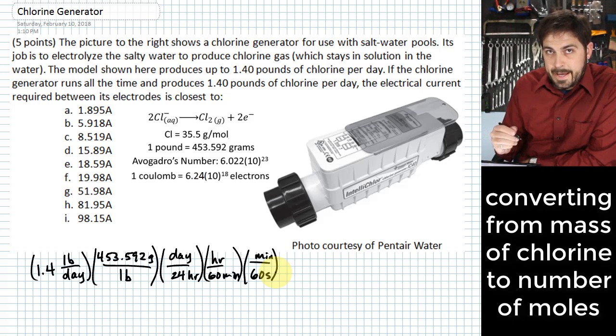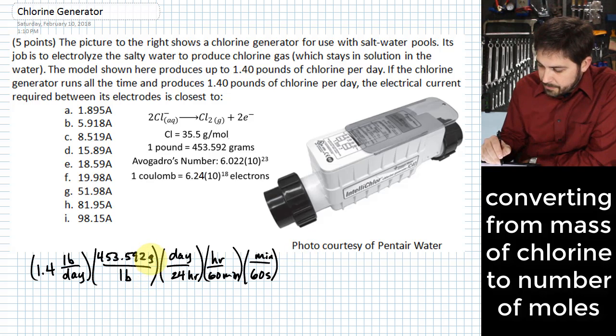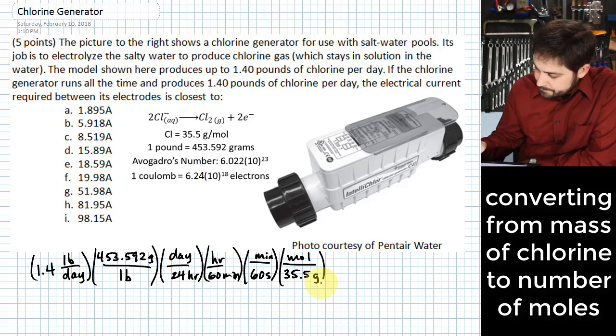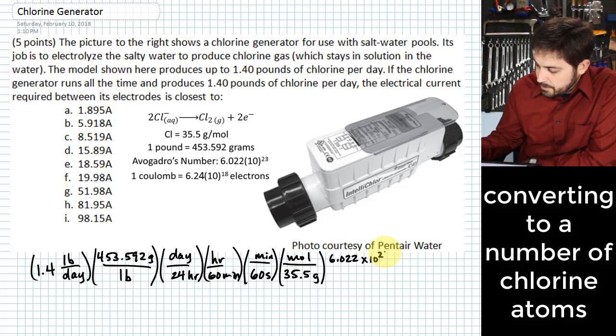The next thing we want to do is look at our chlorine itself. And we know here that we have 35.5 grams per mole of chlorine. So what we can do is figure out how many moles of chlorine per unit of time we're producing here by multiplying. We want to actually get rid of the grams, so we're going to put 35.5 grams in the denominator, and we'll put moles in the numerator. But what is a mole in terms of a number? Well, that's your Avogadro's number. So there are 6.022 times 10 to the 23rd in a mole.